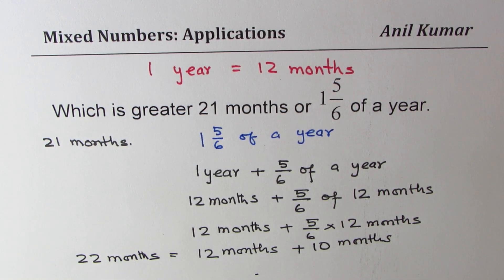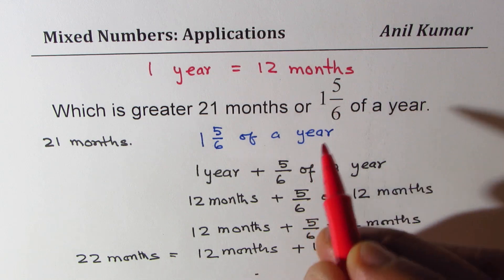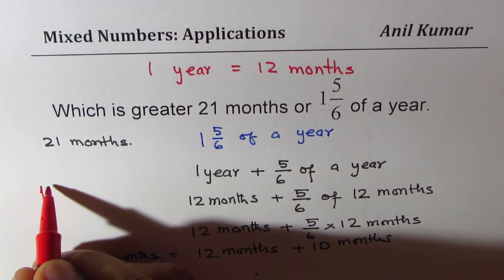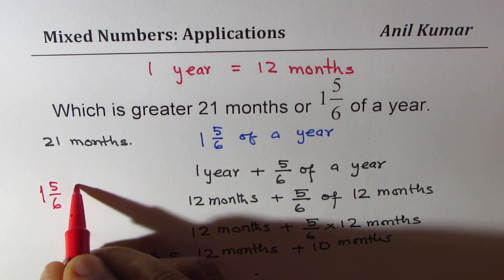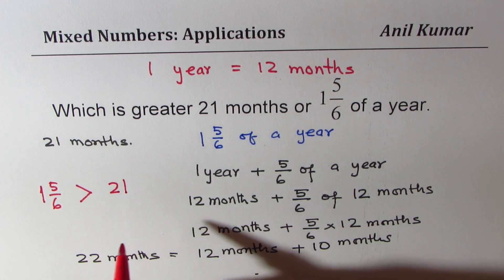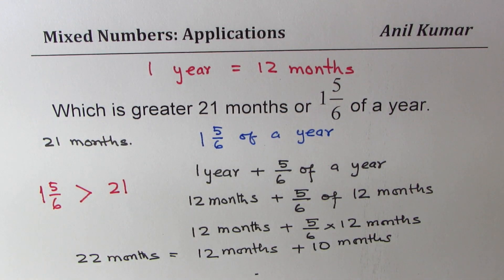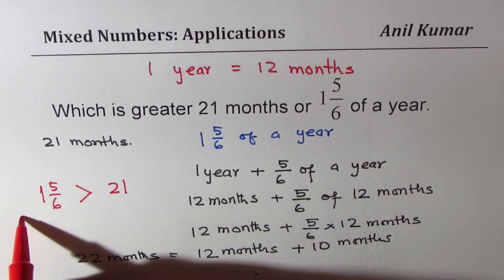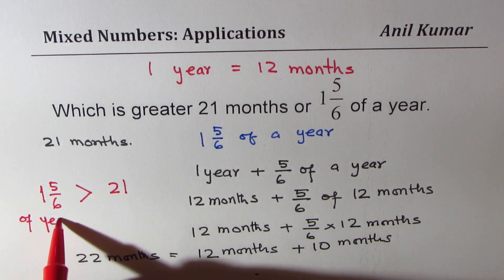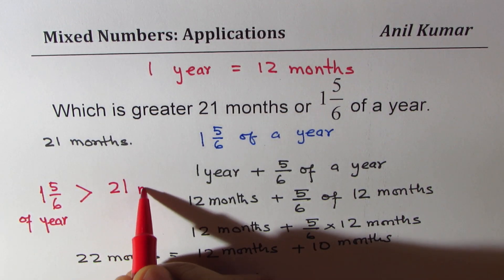Perfect. So clearly we get that 1 5/6 is greater, right? So we have 1 5/6 is greater than 21. Okay, when we write 1 5/6 of a year and 21 months